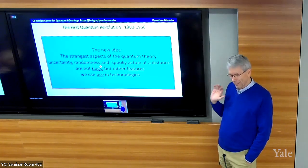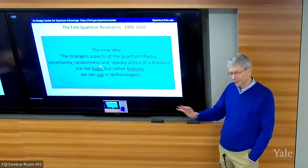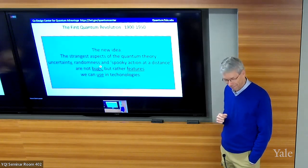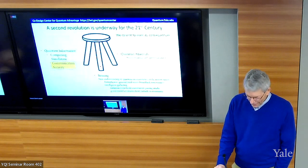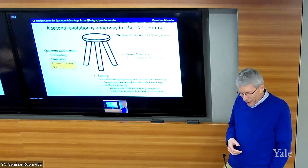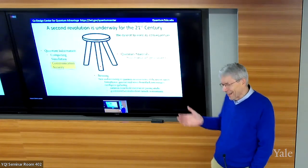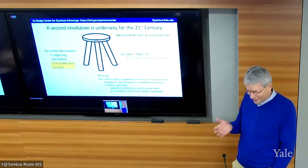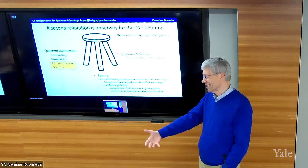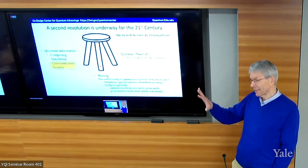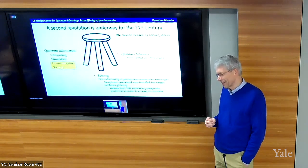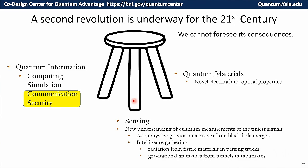And so, the new idea which is driving this second quantum revolution is that the very strangest aspects of quantum theory, this uncertainty and randomness, which I'll show you some examples, they're not bugs. Like, it seems like to a classical physicist, oh, you do an experiment exactly the same way every time and you get a random result. That seems bad. I can't predict as well as I could before. You can predict the probabilities of different results, but you can't predict the results of any experiment. It seems like a bug, but in fact, it can be a feature that we can use in technologies. And in fact, that randomness is going to be key to our quantum encryption protocol that we're going to work through today for securely transmitting information.